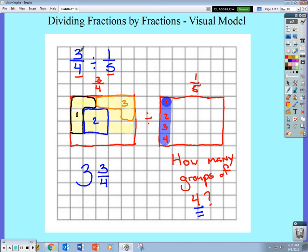So 3 fourths divided by 1 fifth is equal to 3 and 3 fourths. So just to verify this answer, I'm not going to solve this using the algorithm I'm using in class. We have 3 fourths divided by 1 fifth. We've been now changing that to the dividend stays the same.